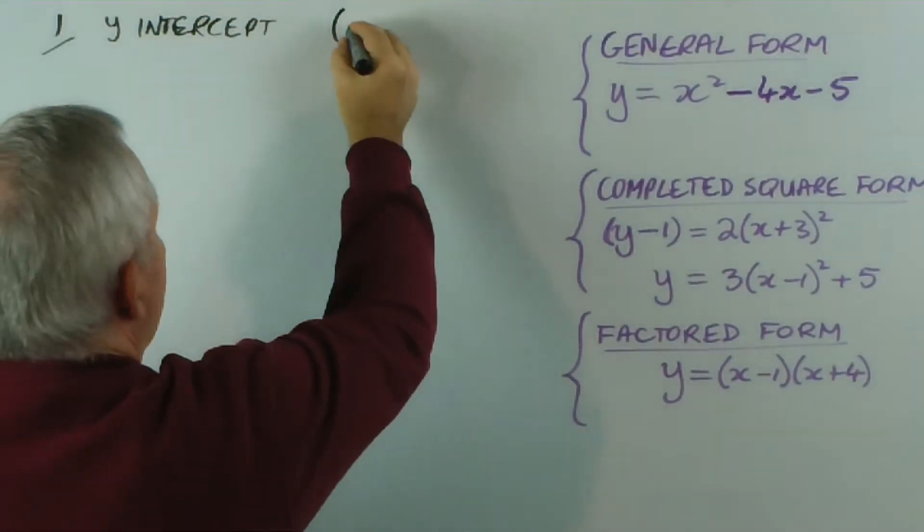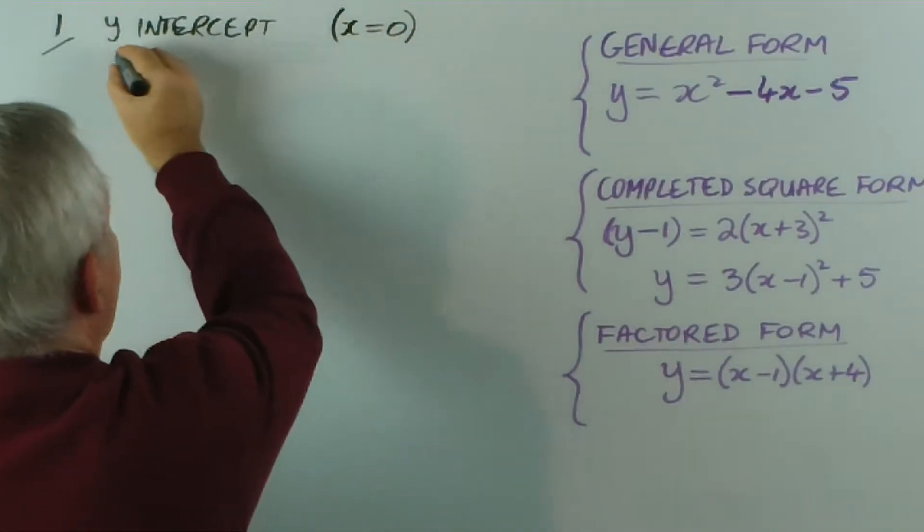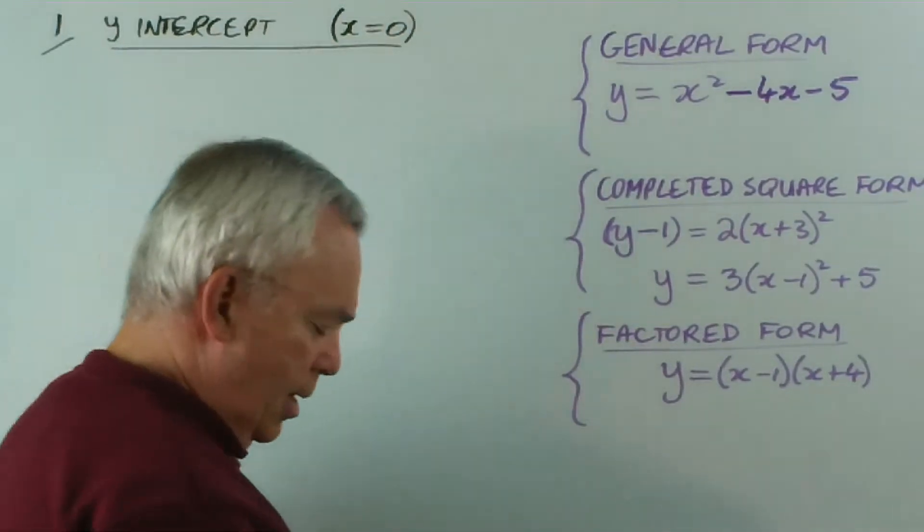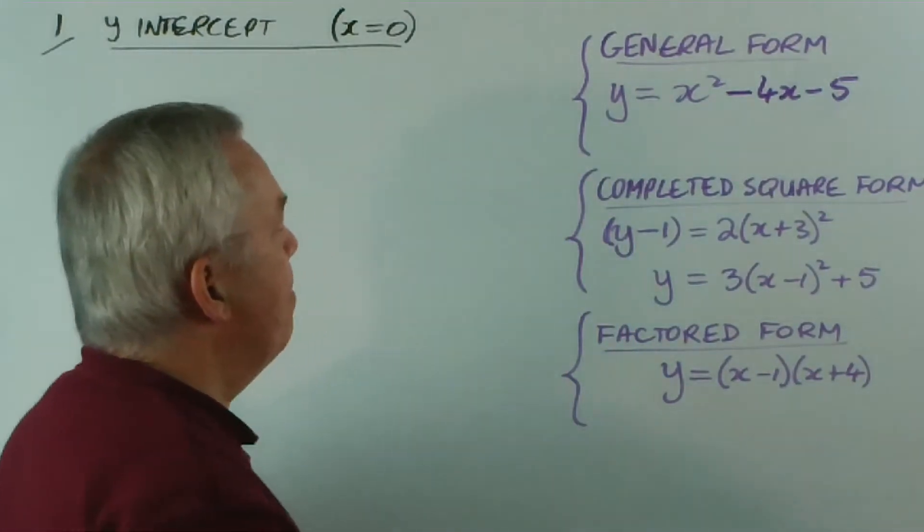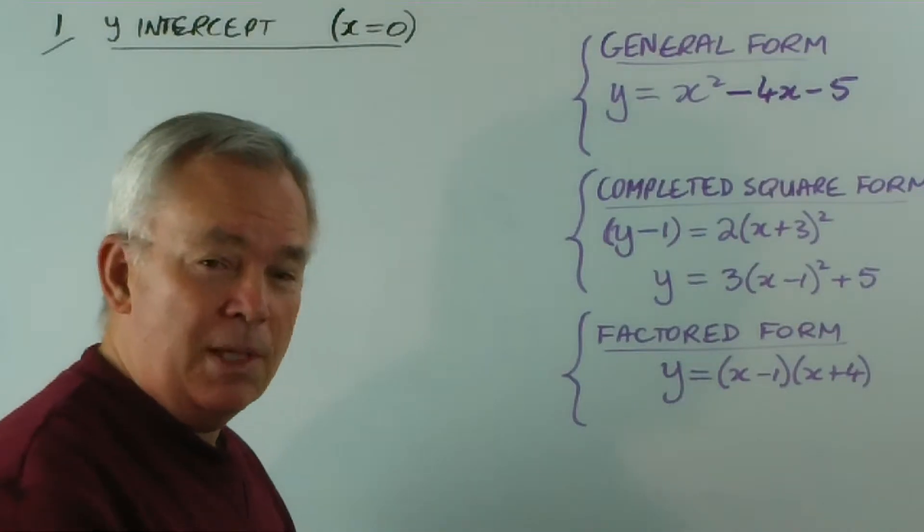And you might remember that we always do that by substituting x equals zero. This is perhaps the easiest of the four steps, and in some cases it's extremely easy.